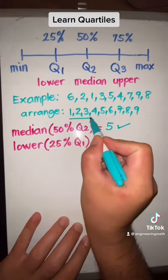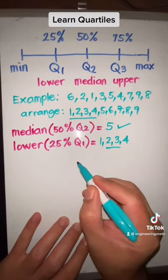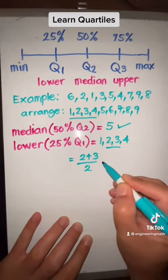The lower, or 25% quartile, is the median of the lower half. The lower half is 1, 2, 3, 4. The median of 1, 2, 3, 4 is in between 2 and 3, so we take the average.